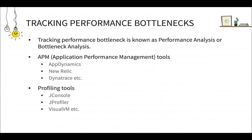Another category of tools used to track down performance bottlenecks are profiling tools. These are mainly used by developers to check coding-level items, such as how long a certain method is taking or how garbage collection behaves when the number of users increases. Profiling helps uncover all these issues. Commonly used profiling tools include JConsole, JProfiler, and VisualVM. You can track down bottlenecks by using a combination of APM tools and profiling tools.